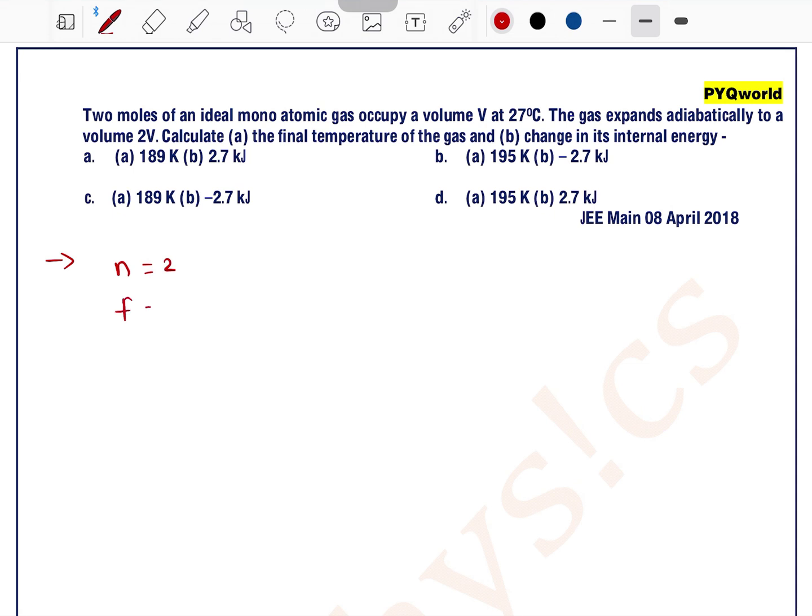See, 2 moles means n is equal to 2, monoatomic gas means f is equal to 3. Let's say initial volume is V at temperature 27°C means 300 Kelvin. The gas expands adiabatically to a volume 2V. Calculate the final temperature and change in its internal energy.